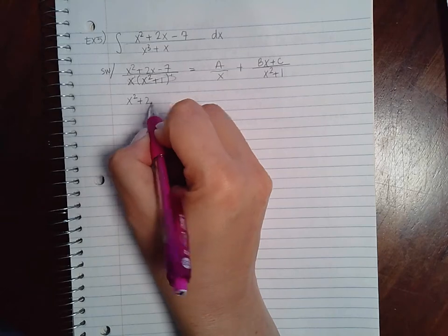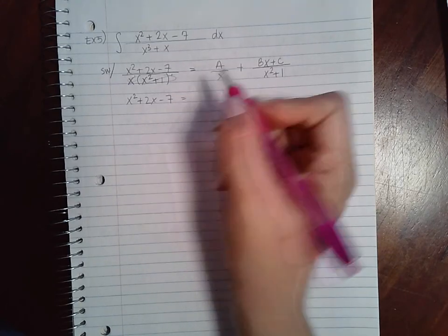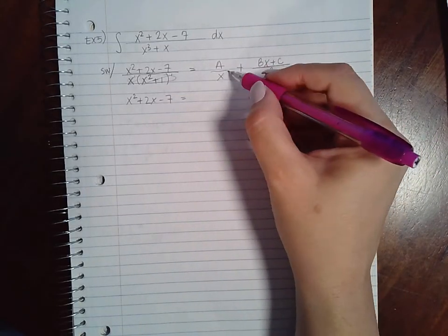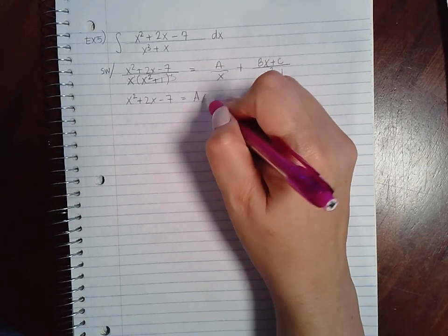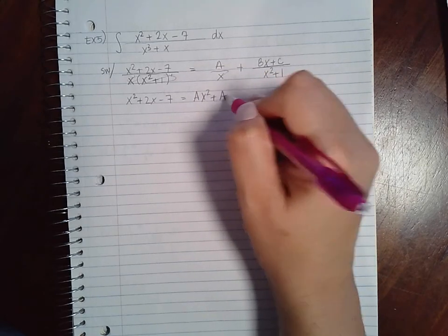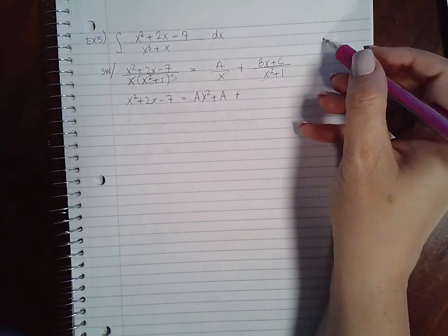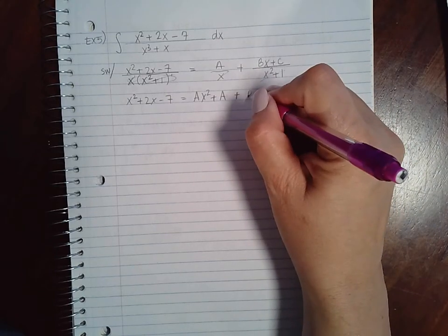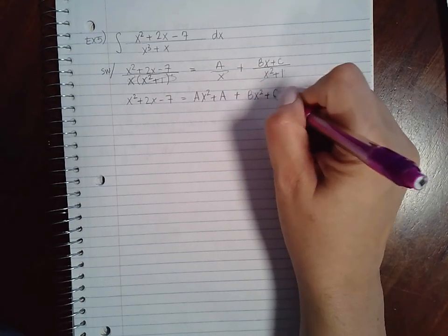But if I multiply by that here, these are going to cancel and I'm going to end up with Ax squared plus A. And here the x squared plus 1s will cancel, but I'll end up with Bx squared plus Cx.